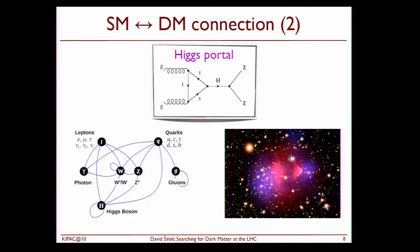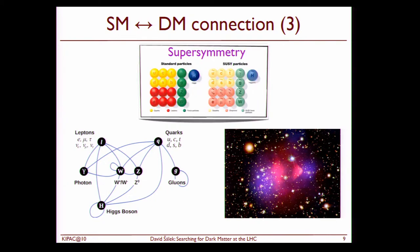The other option actually for the connection between standard model and dark matter is the Higgs portal dark matter. So the meaning that we produce Higgs boson and this Higgs boson actually provides the pair of dark matter and anti dark matter particle. And finally, it can be that we don't have only one particle missing. It's the whole bunch of particles and the dark matter is one of them. For instance, in supersymmetry, we have such a candidate in the lightest supersymmetric particle.